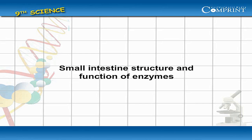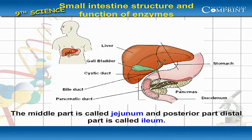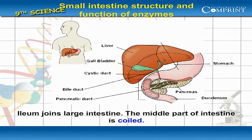The small intestine is a tube of 6 meters length and 3 centimeters width. The anterior or proximal part is called duodenum, the middle part is called jejunum, and the posterior or distal part is called ileum. Ileum joins the large intestine. The middle part of the intestine is coiled.